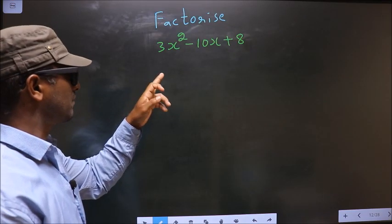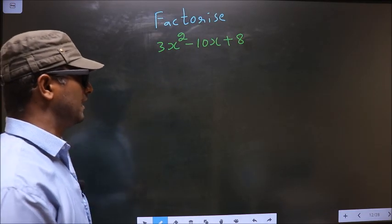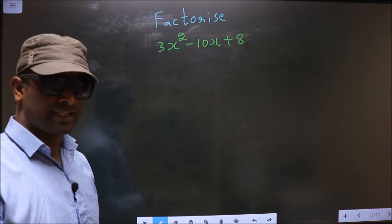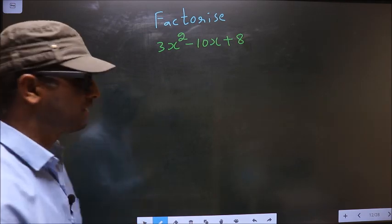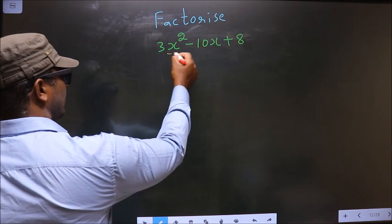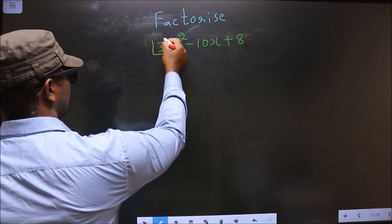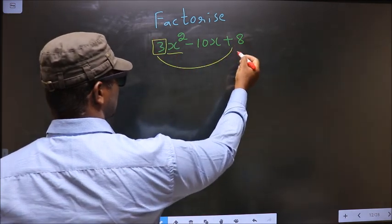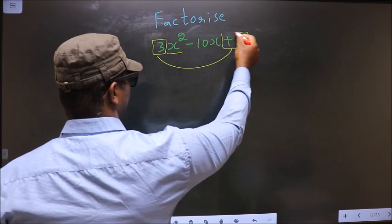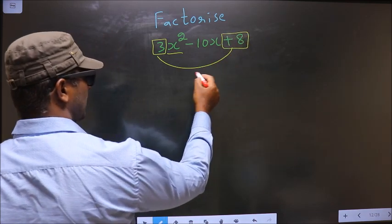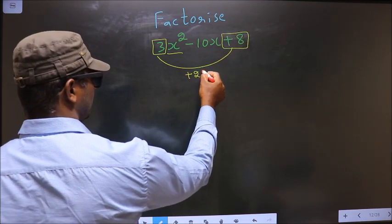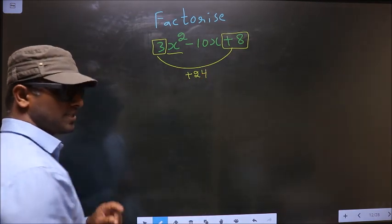Factorize 3x square minus 10x plus 8. To factorize, step 1: the coefficient of x square, that is 3 here, should be multiplied to the constant, that is plus 8. So 3 into plus 8 is plus 24. This is your step 1.